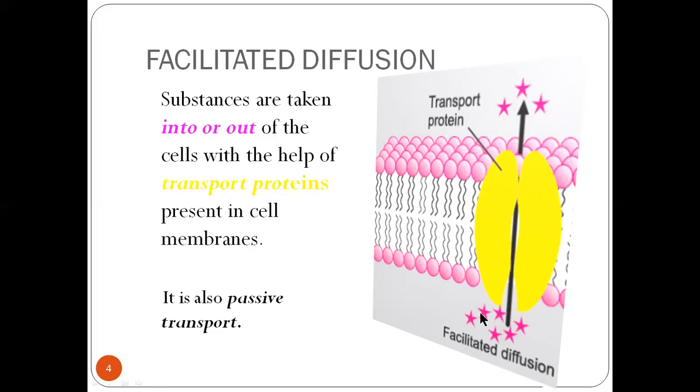Transport proteins are inside the cell membrane. These substances are made in star shape to show this substance higher concentration and lower concentration. Facilitated diffusion also moves from higher concentration to lower concentration into and out of the cells in both sides. Transport protein makes a path.